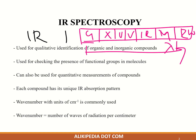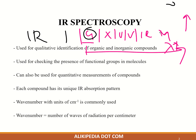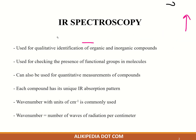You can see that when we go from left to right, the frequency decreases while the wavelength increases. It means that the radio wave has the highest wavelength while the lowest frequency or energy. The gamma ray has the highest energy while the lowest wavelength.